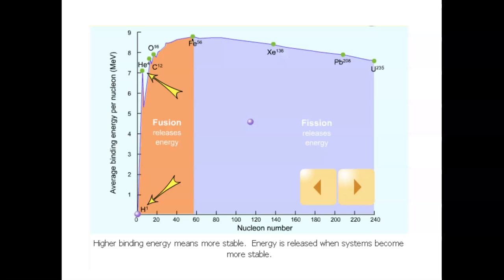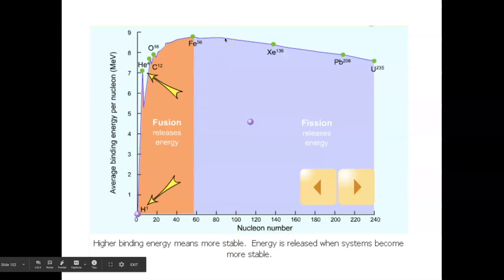There are two competing forces: the strong force keeping nucleons together working over small distances, and the electrostatic repulsive force becoming more dominant over larger distances. As you add more nucleons the nucleus grows larger, and electrostatic repulsion starts persisting, destabilizing the nucleus. Notice uranium-235 is lower in binding energy — it doesn't have enough energy to keep itself together, which is why it's susceptible to fission.